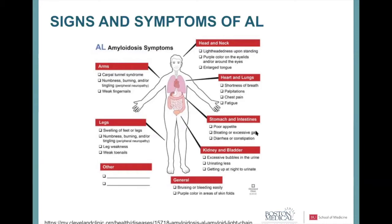Patients develop easy bruising due to capillary fragility or coagulation abnormalities. Amyloid deposition in the kidneys can cause nephrotic syndrome — protein loss in the urine presenting as bubbles in the urine or leg swelling. Autonomic dysfunction from amyloid in GI tract nerves leads to diarrhea or constipation. Other symptoms include shortness of breath, palpitations, fatigue, and chest pressure from high heart pressures. Macroglossia — enlarged tongue — is uncommon but very characteristic of AL amyloidosis.